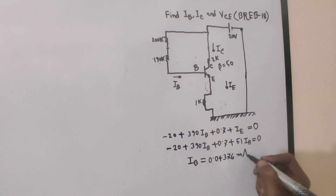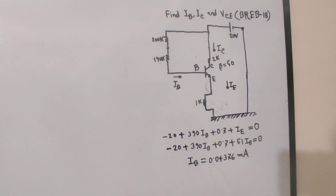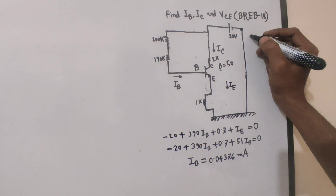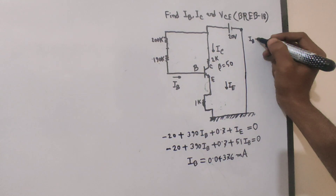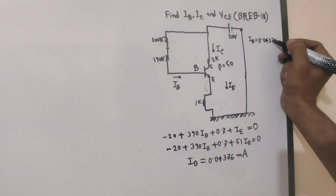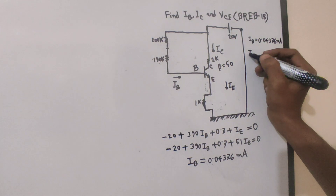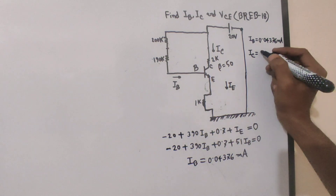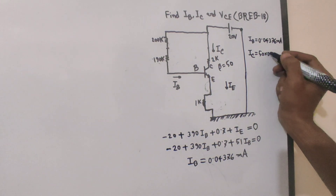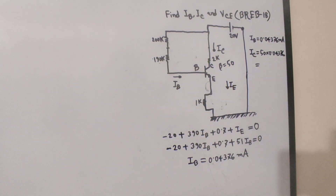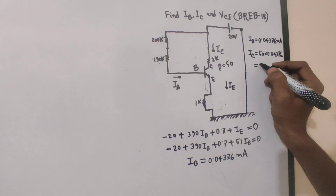So iB = 0.04376 milliamps. Now for iC: iC = β × iB = 50 × 0.04376 = 2.188 milliamps. So iC comes out to approximately 2.188 milliamps.